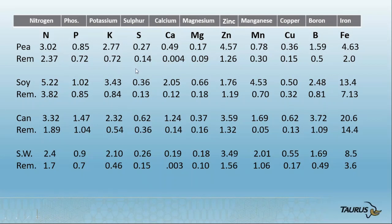Sulfur, calcium — lots of calcium used by canola, by soybeans. Magnesium is needed for photosynthesis. Zinc — and you can see here for guys in southern Saskatchewan, which are zinc-deficient, peas need a lot more zinc than any of our other crops, but so does canola. One for you soybean growers: you'll notice that soybeans use a lot more manganese than any of the other crops we grow. Soybeans handle their fixed nitrogen produced in the nodules differently than all of our other legumes, and as a consequence they need a lot more manganese to do that.